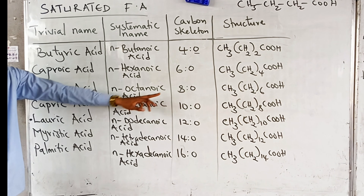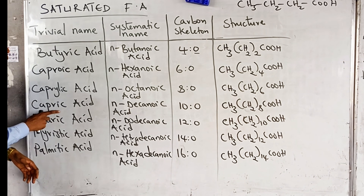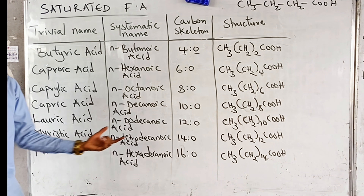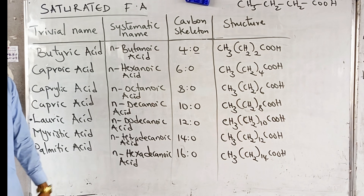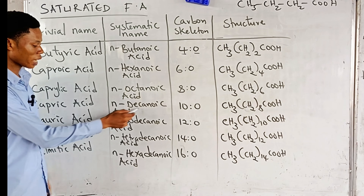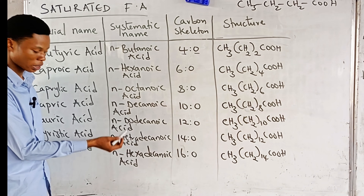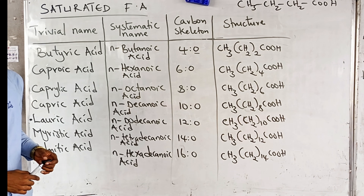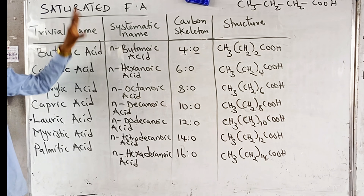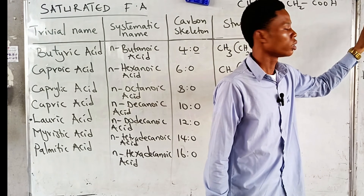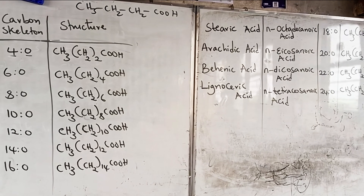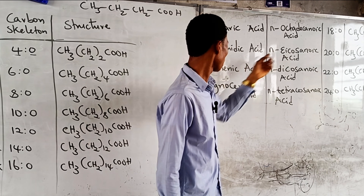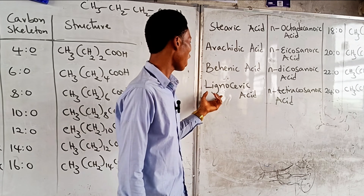Capric acid is octanoic acid with eight carbons and no double bonds. After capric acid comes lauric acid (10 carbons), myristic acid (14 carbons), palmitic acid (16 carbons). Then stearic acid is octadecanoic acid (18 carbons), arachidic acid (20 carbons), behenic acid (22 carbons), and lignoceric acid (24 carbons). The prefixes deca=10, dodeca=12, tetradeca=14, hexadeca=16, octadeca=18, and 20 would be eicosanoic.